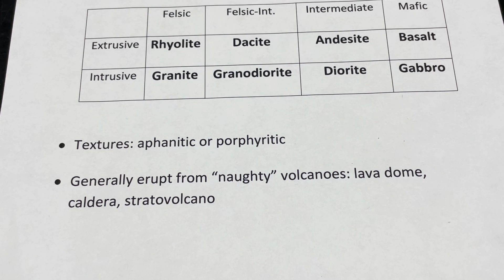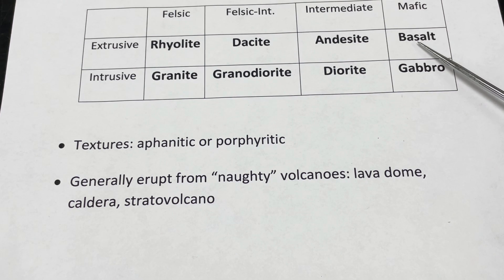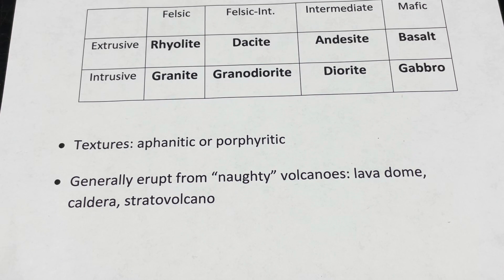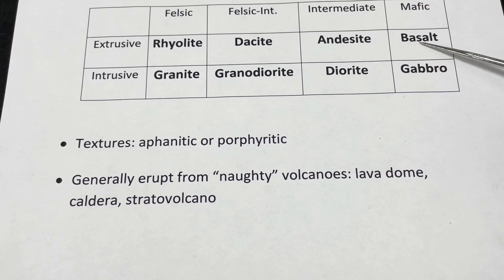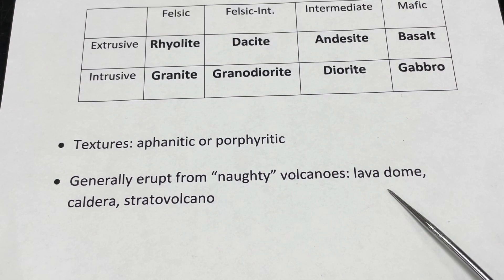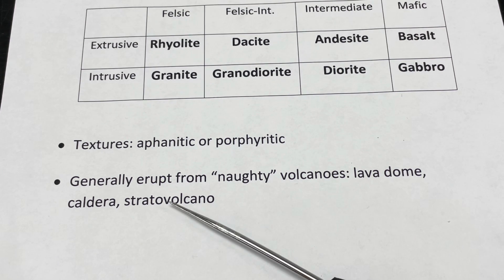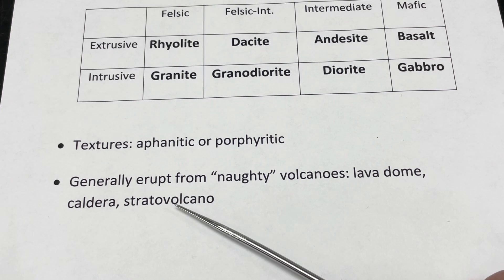All the rocks we're looking at today — andesite, dacite, rhyolite — generally erupt from what I like to call the naughty volcanoes, the much more explosive ones. The nice volcanoes mainly produce basalt: cinder cones, shield volcanoes, fissure eruptions — places like Hawaii or Iceland. The naughty volcanoes include lava domes like at the summit of Mount Saint Helens, calderas like Yellowstone, Long Valley Caldera, and Crater Lake, and of course stratovolcanoes like Mount Shasta, Mount Rainier, and Mount Fuji.